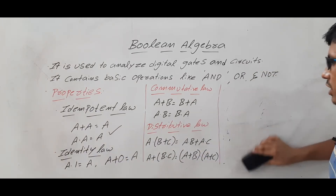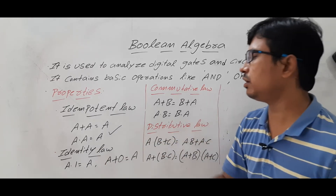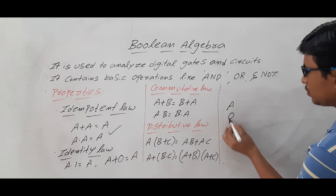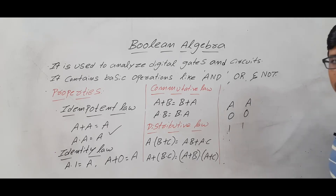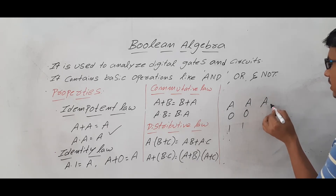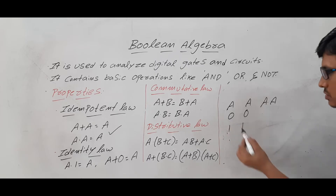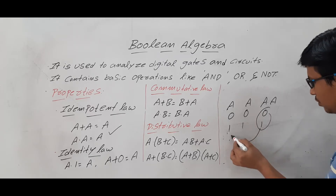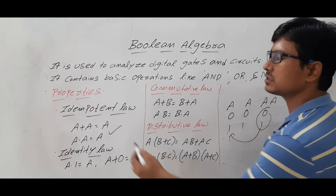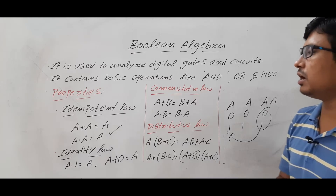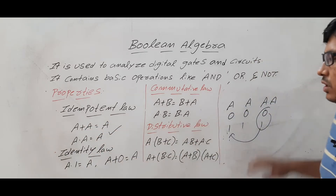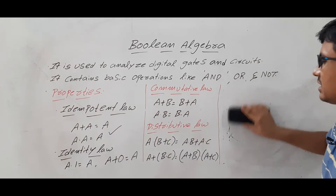To verify A AND A: take A as 0 and 1; 0 AND 0 = 0 and 1 AND 1 = 1, which is equivalent to A only. So the Idempotent law states: A OR A = A and A AND A = A.